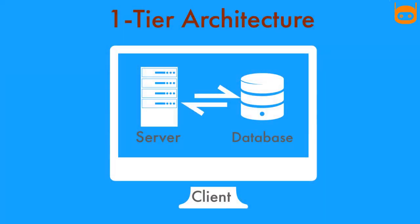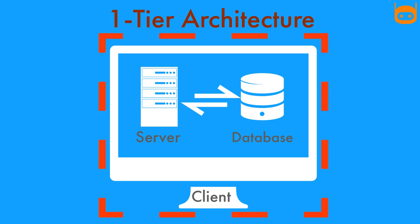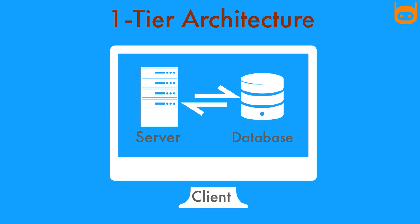One-tier architecture is where the client, server, and database all reside on the same machine. Anytime you install a database in your system and access it to practice SQL queries, it is one-tier architecture. For example, while creating a web application in Java, we install an Apache server and MySQL database on our machine to run the web application. We don't need an extra physical server or database outside our computer.